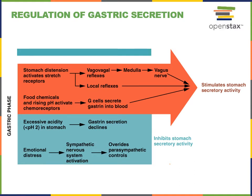While the intrinsic mechanism of the gastric phase primarily stimulates increased gastric secretion and increased churning, excessive acidity or emotional distress can also lead to decreased gastric secretion and decreased churning.